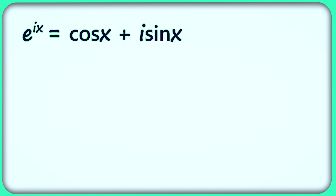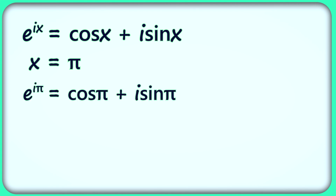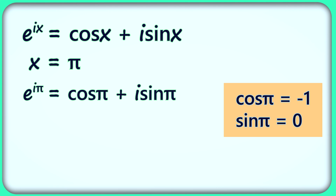And in this equation, let's substitute x equal to pi. So we will get the equation in another form: e raised to i pi is equal to cos pi plus i sin pi. Here we can write cos pi equal to negative 1, and also sin pi is equal to 0. So e raised to i pi is equal to negative 1, because i sin pi will be 0, and we have substituted cos pi as negative 1.